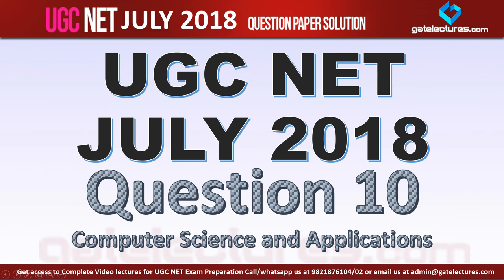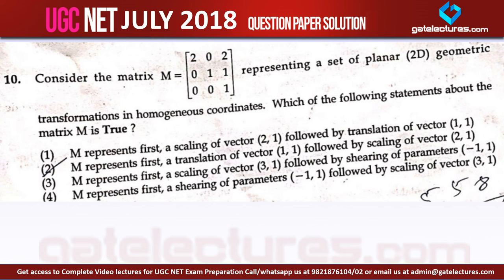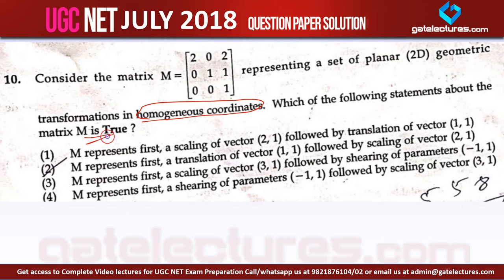Let us look at question number 10, which is again from Computer Graphics. It says: consider the matrix M, which is given, representing a set of planar 2D geometric transformations in homogeneous coordinates. Which of the following statements about the matrix M is true? There are four statements given. I am not reading the statements because that is going to waste a lot of time — you can pause the video and read the statements yourself.